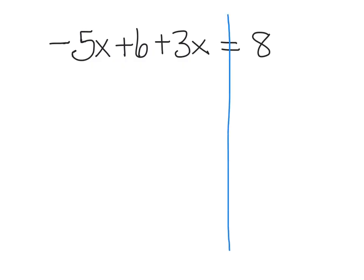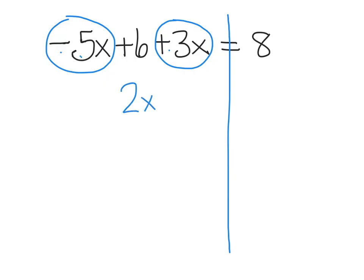To start with, we're going to go ahead and draw our wall. The next thing we need to do is combine any terms that are like terms. I'm going to start by circling the terms that have the x's on them. Those are called like terms. We look at the coefficients and either add or subtract them. Since we have a negative 5 and a positive 3, we subtract them and get negative 2x. Then I'm going to copy down the plus 6 and the equals 8.